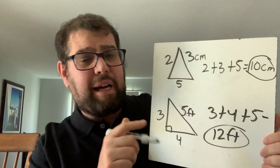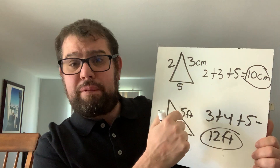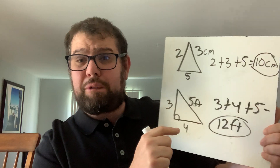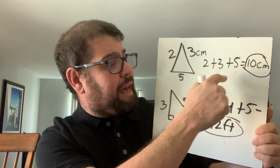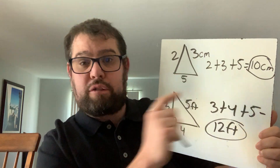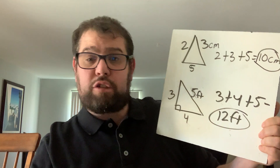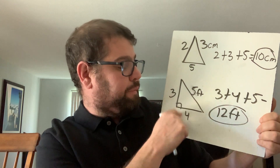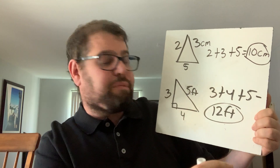I have a few other examples. A triangle with sides two, three, and five: two plus three is five, plus five is ten centimeters — don't forget to label. Then a right triangle with sides three, four, and five: three plus four plus five is twelve feet. Label, label, label! Perimeter is pretty straightforward.